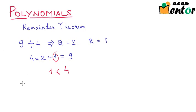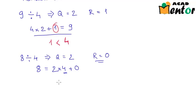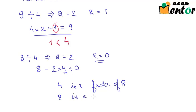Let's look at another example. What if I had to divide 8 by 4? In that case, I would have got the quotient as 2 but the remainder would have been 0. I can again write 8 in terms of the remainder, quotient and the divisor. So 8 was nothing but 2 times 4 plus 0, that was the remainder. Here again 0 is less than the divisor, that is 4. So in this case, I say that 4 is a factor of 8. When the remainder is 0, I say that 4 is a factor of 8, and I can also say that 8 is a multiple of 4.